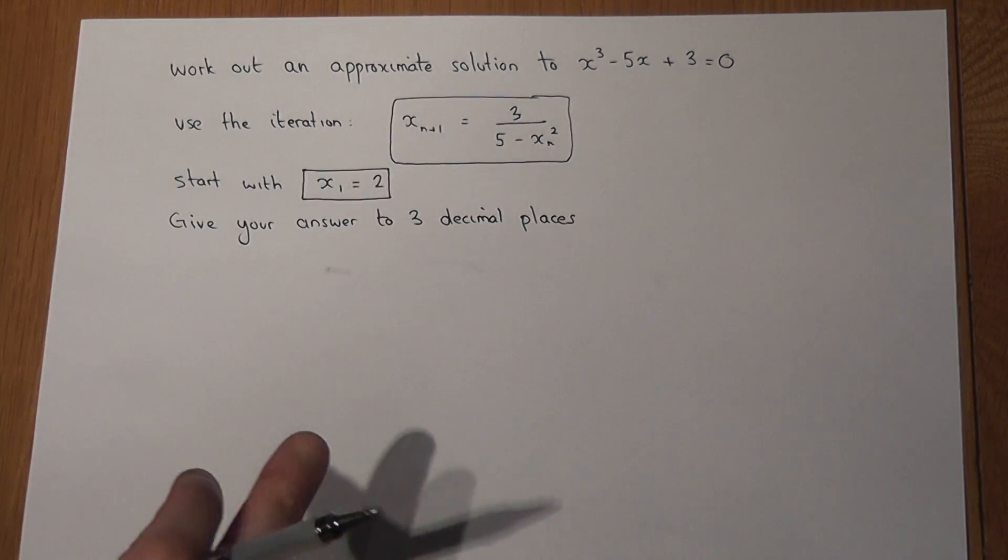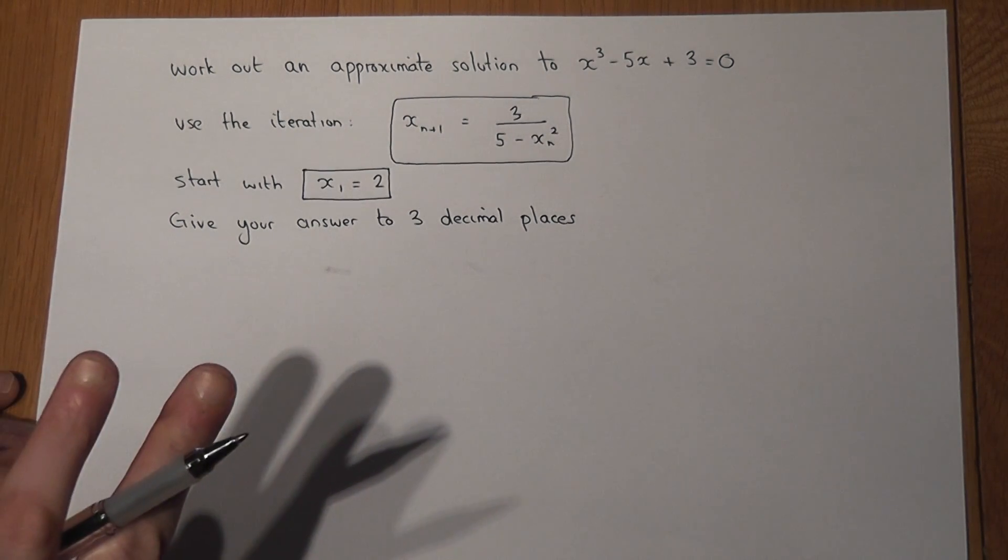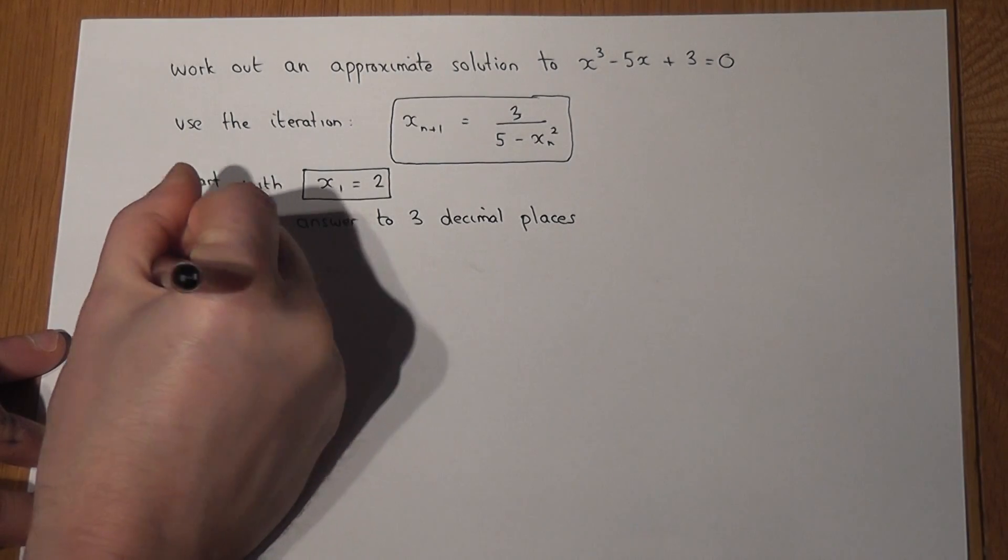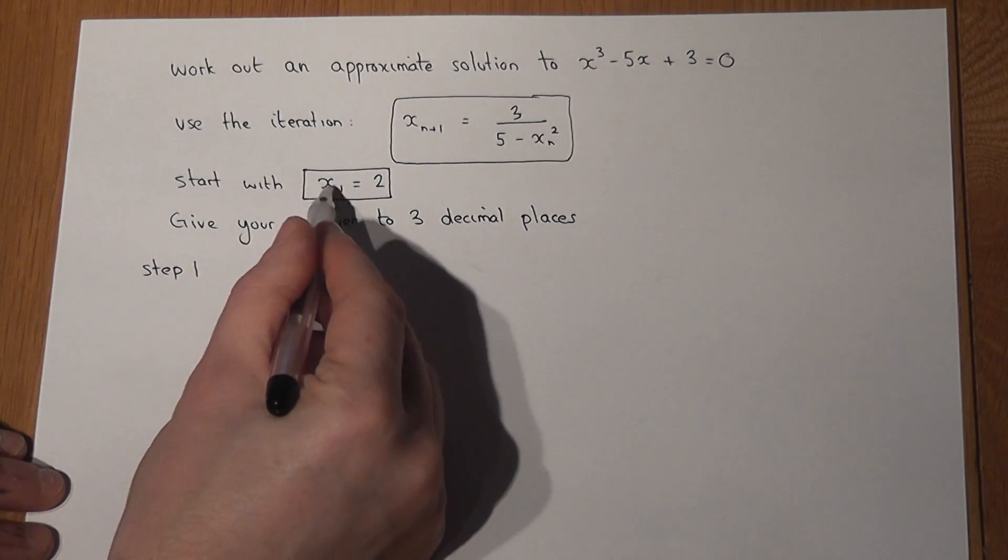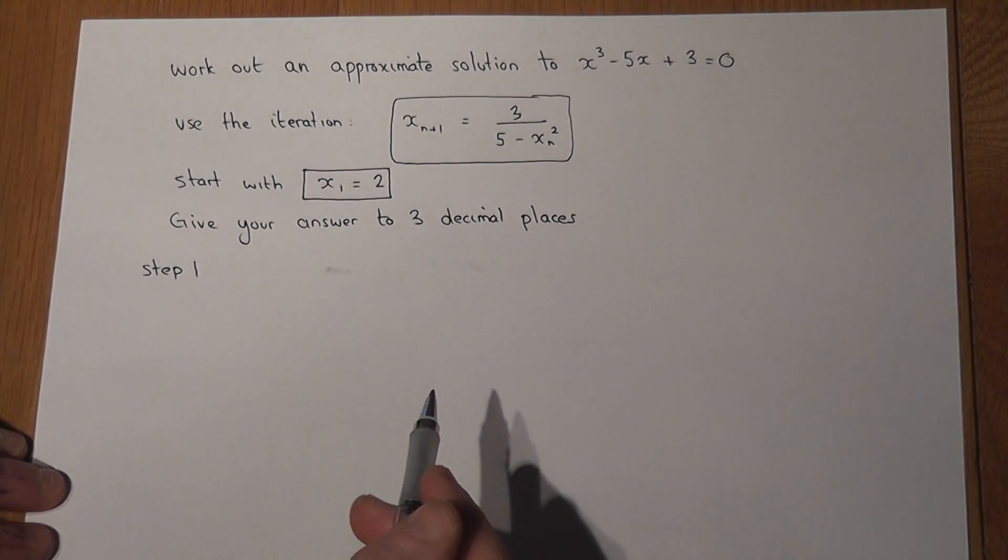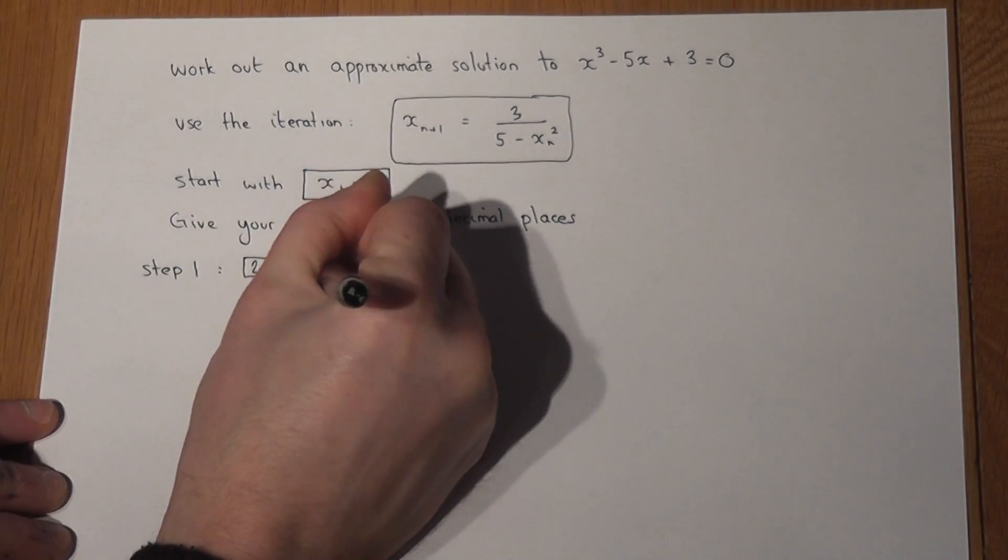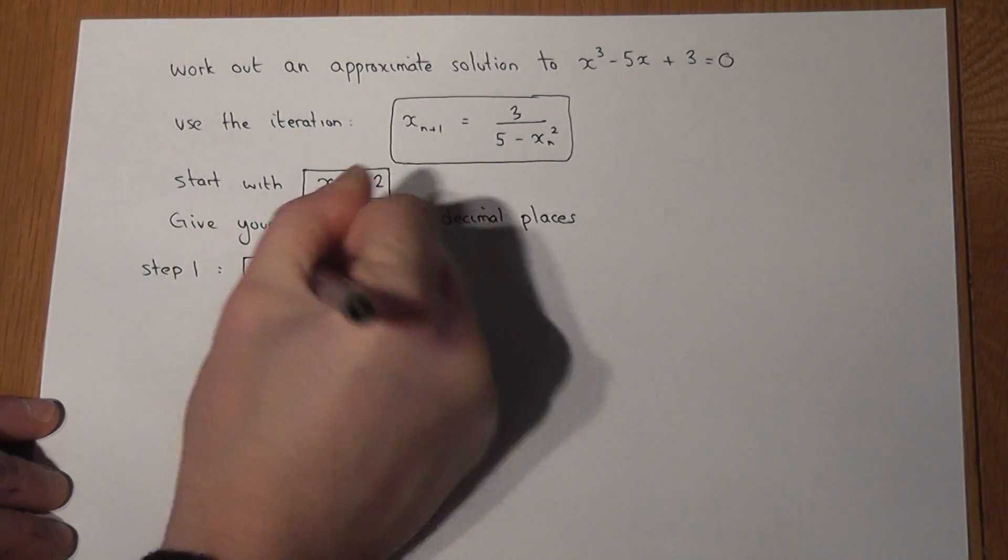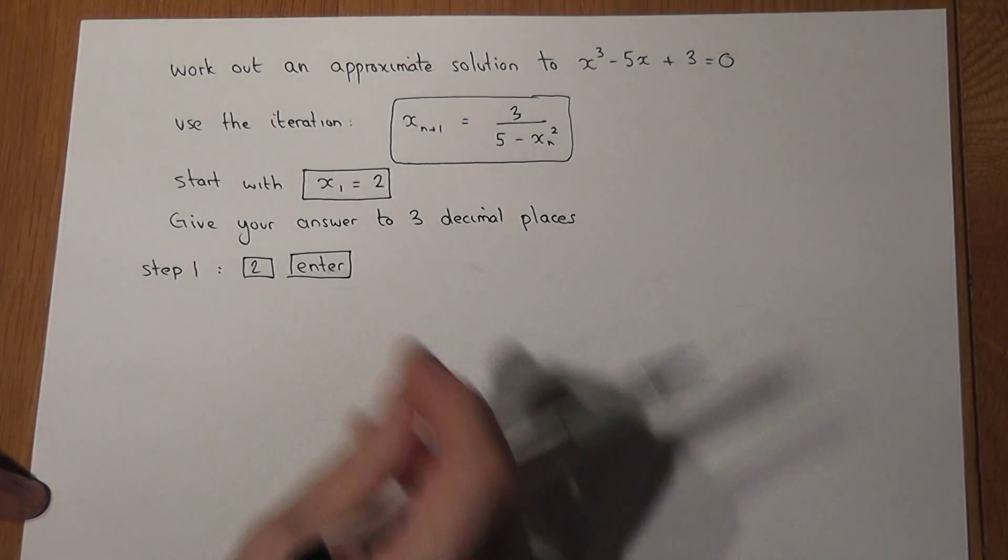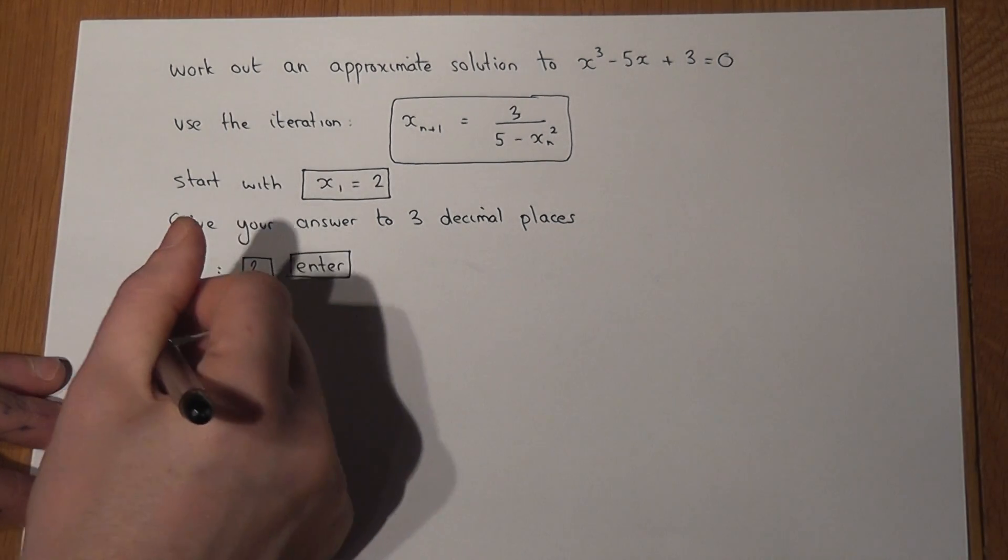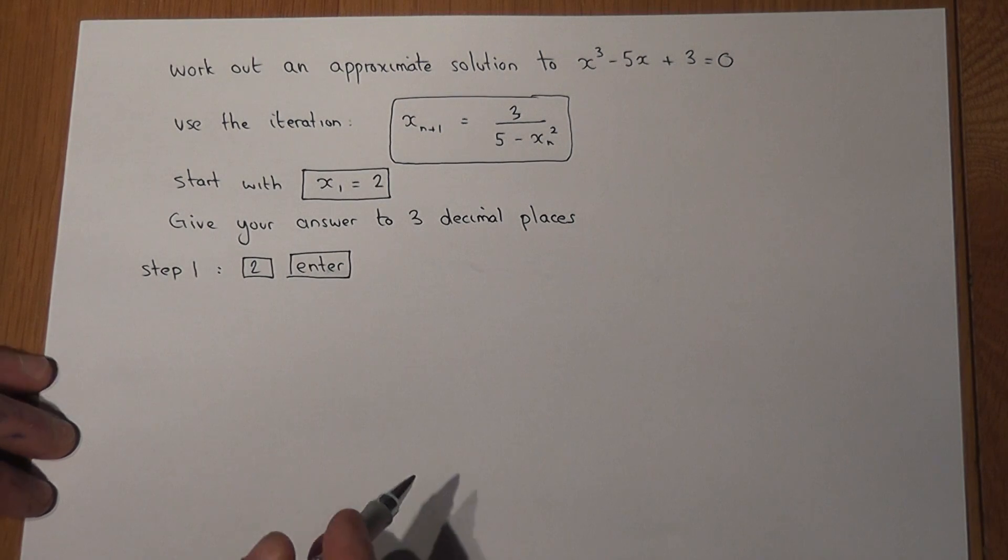On a calculator to get the solution, we have to do two steps. Step one is really important: we enter this value x₁, it's our first term in the iteration, into our calculator and press enter or equals. That stores the number 2 as the value to begin the iteration with. That number can change, but you're always given a first term to use for the iteration.